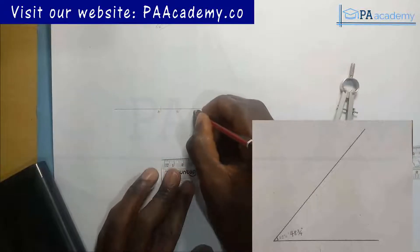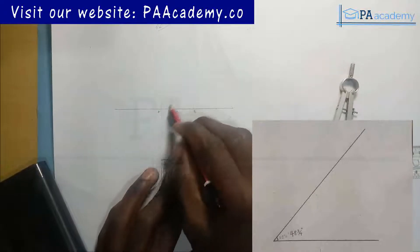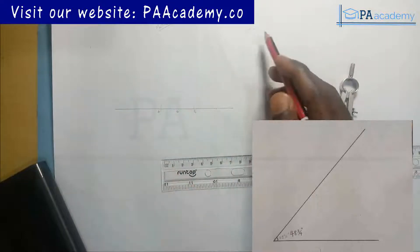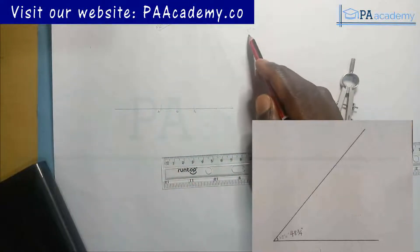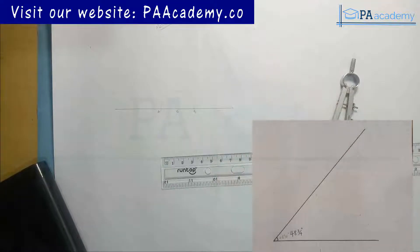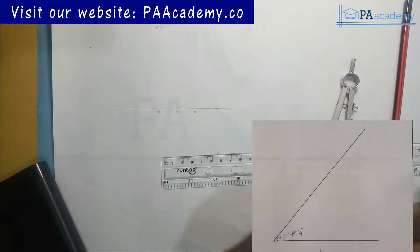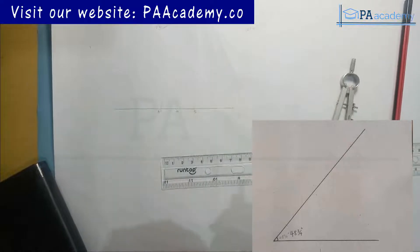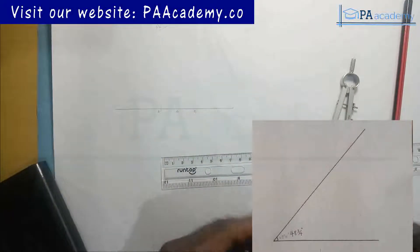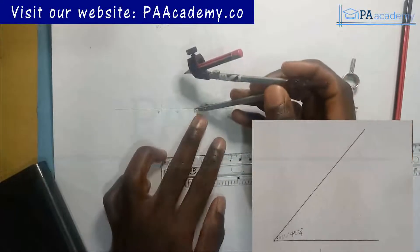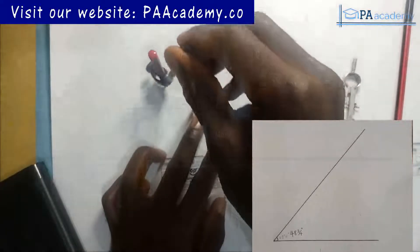I'll call the center of the semicircle point O, the left touching point point A, and the right touching point point B. Since I'm using angle 45 and angle 3¾, I need to first construct angle 90, then bisect it to achieve angle 45. I bring in my compass at any convenient length from point B and draw an arc.